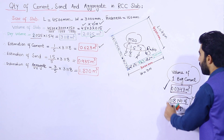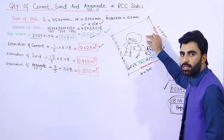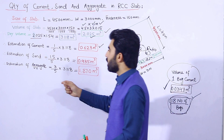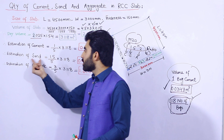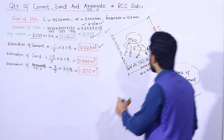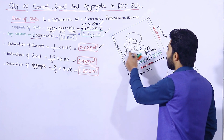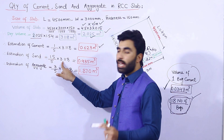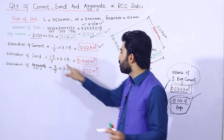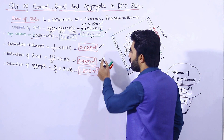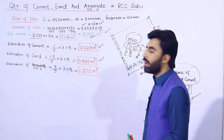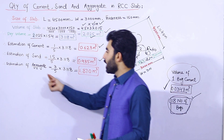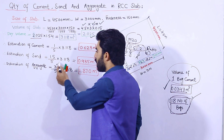Now for the estimation of sand: the sand ratio is 1.5, so (1.5/5) × dry volume = (1.5/5) × 3.118. This gives a total volume of sand of 0.935 cubic meters.